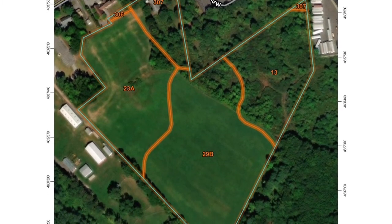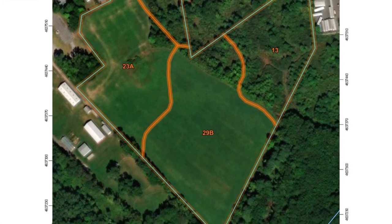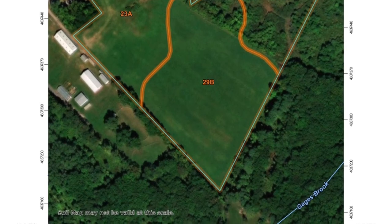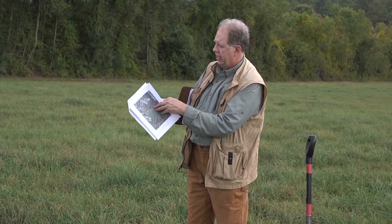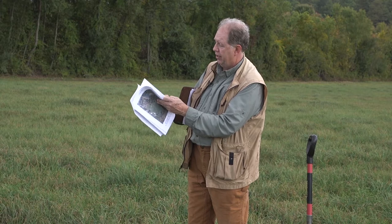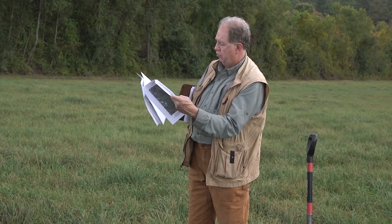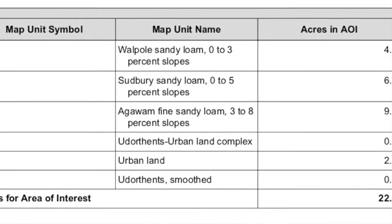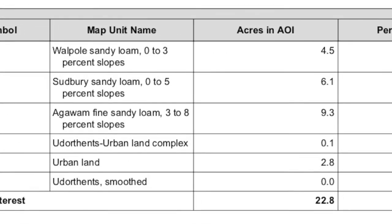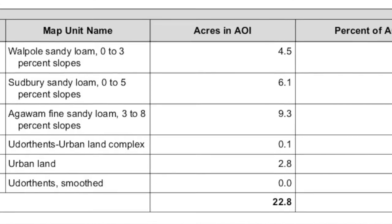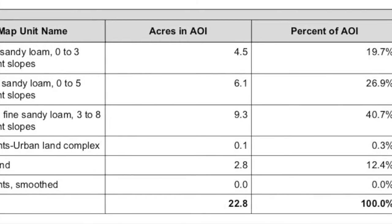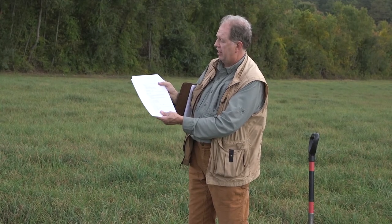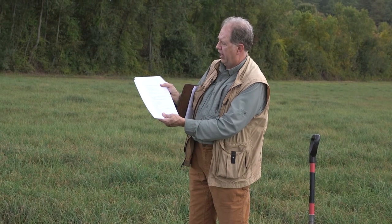There's information about the physical and chemical properties of each mapped area. The area we're standing in is labeled 29B — that's the symbol on the map. From the soil classification system, 29B is labeled Agawam fine sandy loam, three to eight percent slopes. Agawam is the name for where that soil was first recognized, up in Agawam, Massachusetts. Fine sandy loam is the USDA texture of the surface layer.